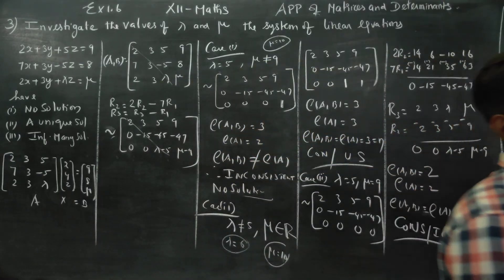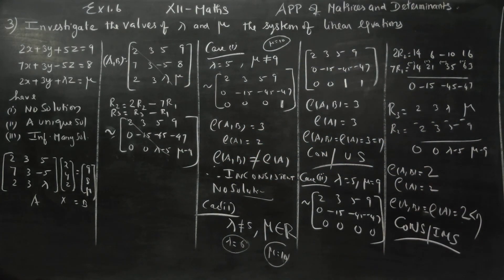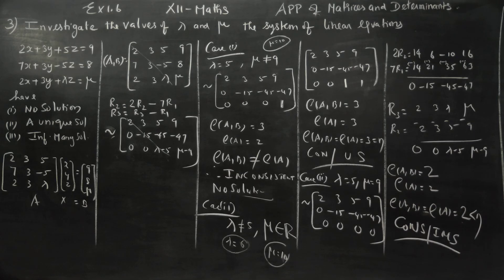Therefore the system is consistent and has infinitely many solutions. Summary: Case 1 — lambda = 5, mu ≠ 9: no solution. Case 2 — lambda ≠ 5, mu = any value: unique solution. Case 3 — lambda = 5 and mu = 9: infinitely many solutions. Thank you.